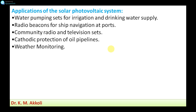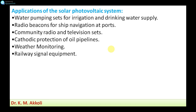Solar photovoltaic systems are used for weather monitoring, which requires continuous electricity and power that can be supplied by the solar photovoltaic system. Railway signal equipment and road signals also work independently, powered by solar photovoltaic systems. Battery charging is another application — solar-charged batteries can be used for vehicles or running any equipment, enabling different applications.